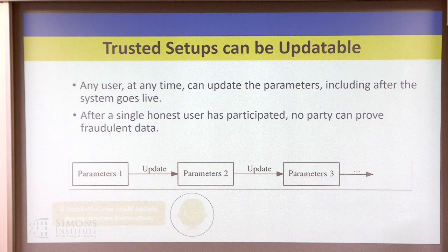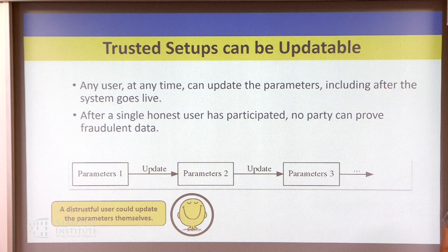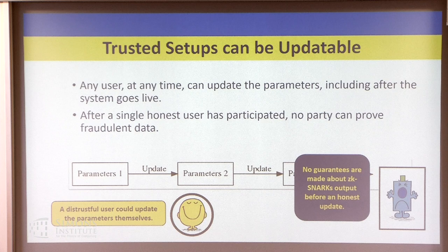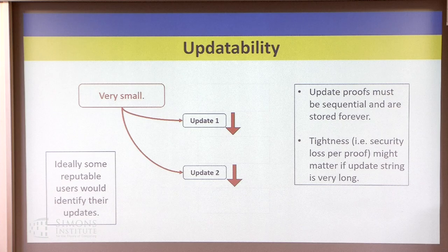This property — where one person updates, then the next person updates, then the next — we call updatability. If one party at any point is not colluding with all other parties, then the resulting parameters will be fine. If a distrustful user says they don't think the setup is okay, you could just incorporate them into the setup without it being a big deal. Our update proofs are very small — about three group elements — so we don't need to store the intermediate reference strings, only the final one and the update proofs.